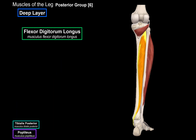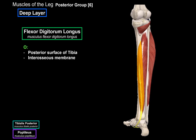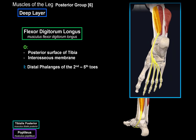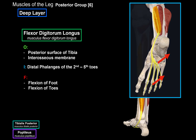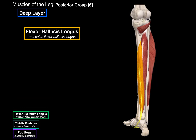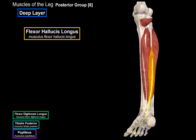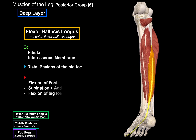Then there's the flexor digitorum longus. This muscle originates from the posterior surface of the tibia and the interosseous membrane, and inserts at the distal phalanges of the second to the fifth toes on the plantar surface. It flexes the foot and flexes the toes. Then there's the flexor hallucis longus, which originates from the fibula and the interosseous membrane and inserts at the distal phalanx of the big toe. Its function is flexion of the foot, supination and adduction of the foot, and flexion of the big toe. That was the deep layer.